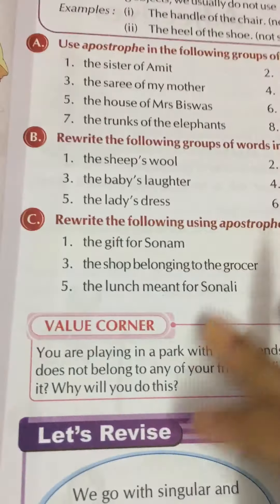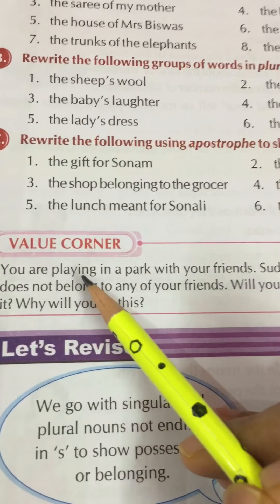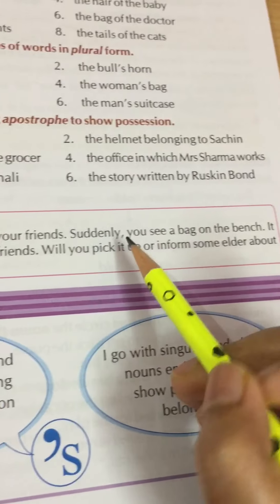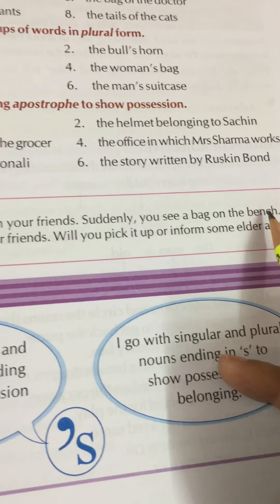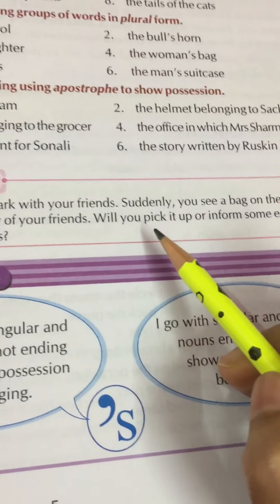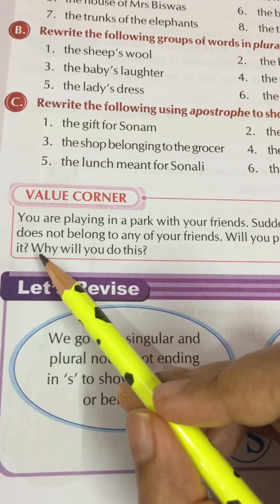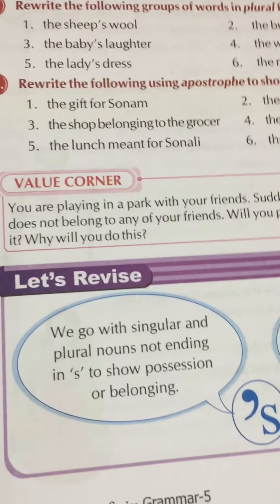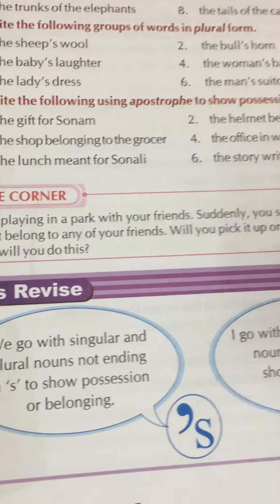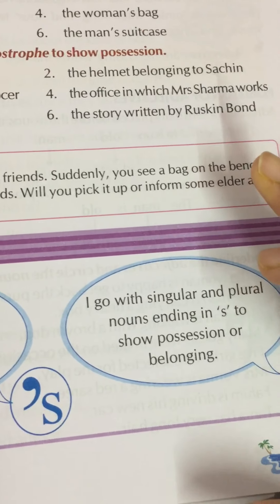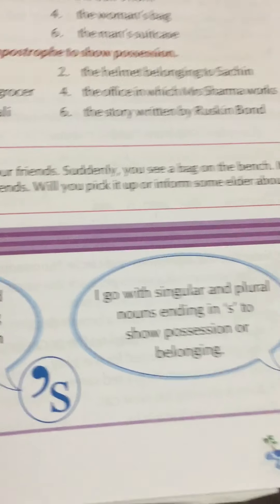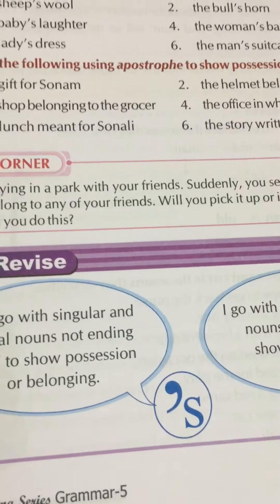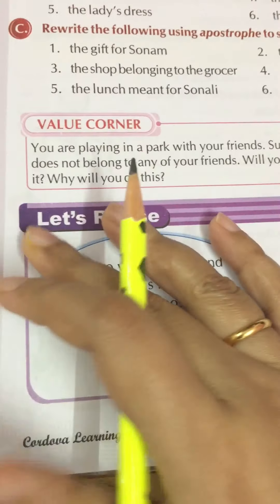Now look at the value corner — this is also very important. Assume you are playing in a park with your friends and you see a bag lying on a bench that doesn't belong to any of your friends. Will you pick it up or inform an elder? Children, whenever you see something that does not belong to you or your friends, you should inform someone elder. We should not pick up or take things that are not ours.